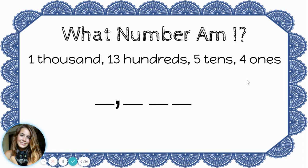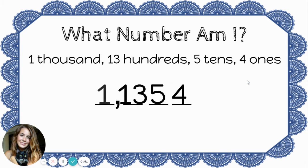Now let's start putting the digits in their places. Four ones, so I'll put a four in the ones place. Five tens, so I'll put a five in the tens place. Thirteen hundreds, so I'll put a thirteen in the hundreds place. And one thousand, so I put a one in the thousands place. Hmm, this number doesn't look quite right to me. Something's up with my hundreds place. I know I can't put a two-digit number like thirteen into one place. Each of these places only holds one digit, so this is not correct.